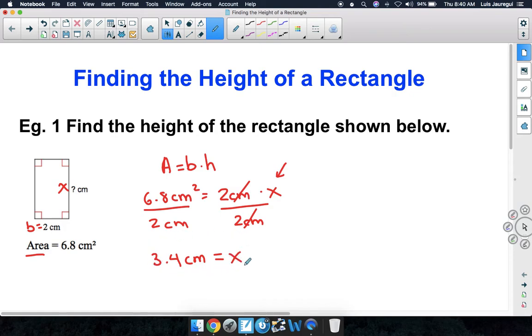So we know that the actual height of the rectangle here is 3.4 centimeters. Let's conclude by writing the sentence: the height of the rectangle is 3.4 centimeters.